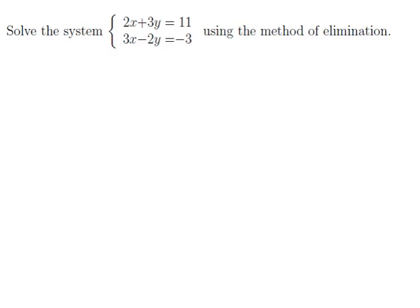Now remember that the method of elimination involves taking a system and converting it into an augmented matrix. So in this case, the first equation would become the row 2, 3, 11, and the second equation becomes the row 3, negative 2, negative 3.